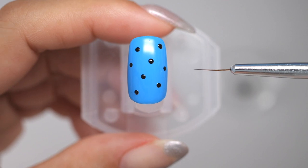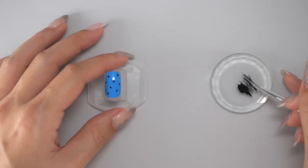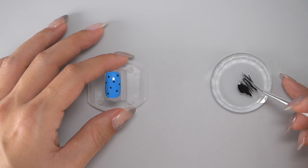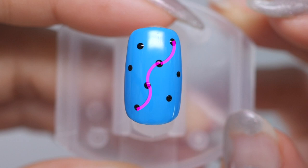Next use a long thin line brush to draw thin curved lines. First, apply black gel to the line brush. Next, use a black gel soft brush to draw the curves alternately on the left and right.